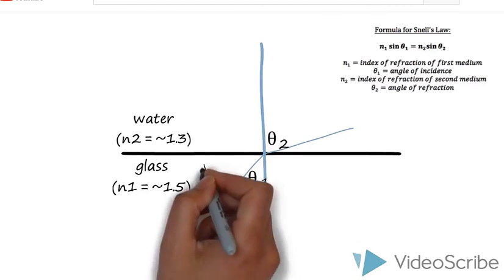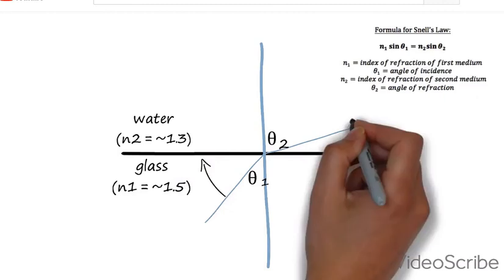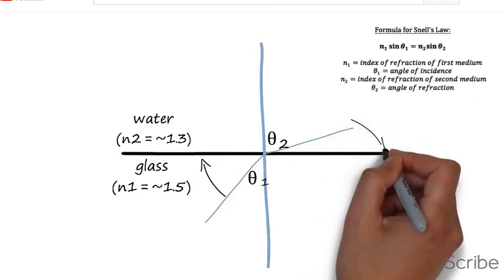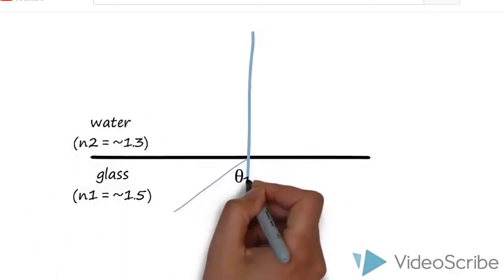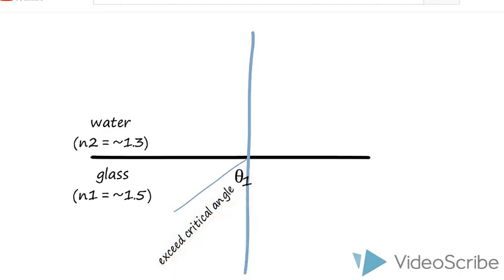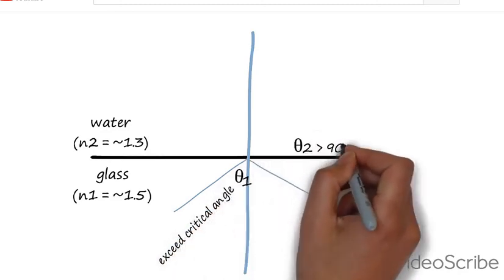As we increase the incident angle, we will eventually reach a point where the resulting angle of refraction is 90 degrees. We call this the critical angle, because once you exceed this angle, you can achieve total internal reflection, and the light will not enter the second medium.